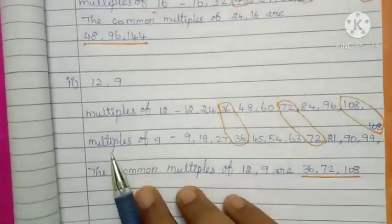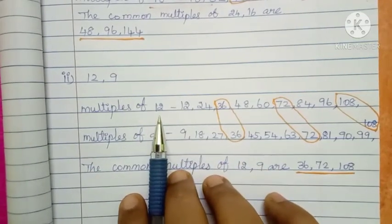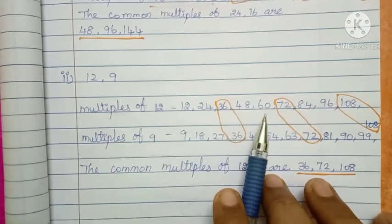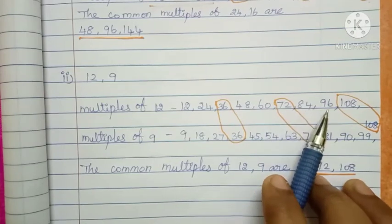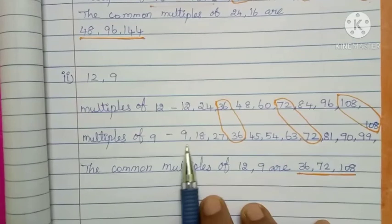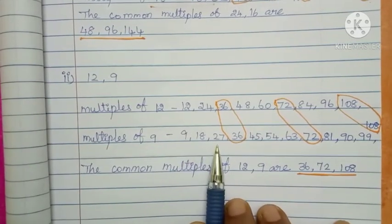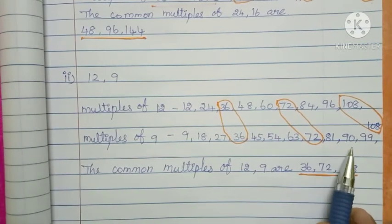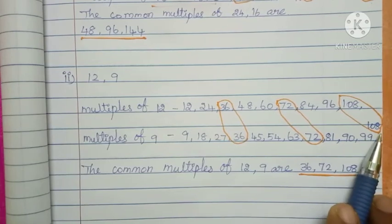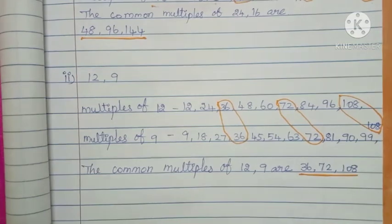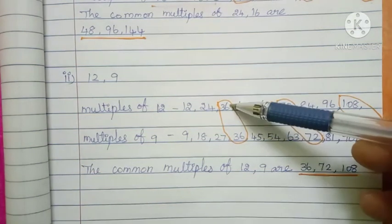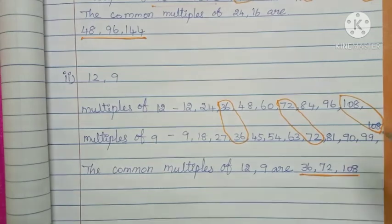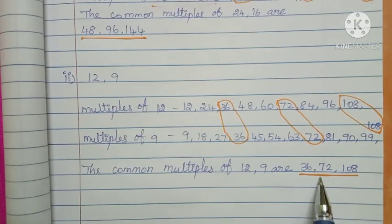You understand children? The next numbers: 12 and 9. Multiples of 12: 12, 24, 36, 48, 60, 72, 84, 96, 108. Then 9 table: 9, 18, 27, 36, 45, 54, 63, 72, 81, 90, 99, 108. Take the 12 table and 9 table — which ones are common? 36 is a common number, 72 is a common number, 108 is a common number. Easy to find out: 36, 72, 108.